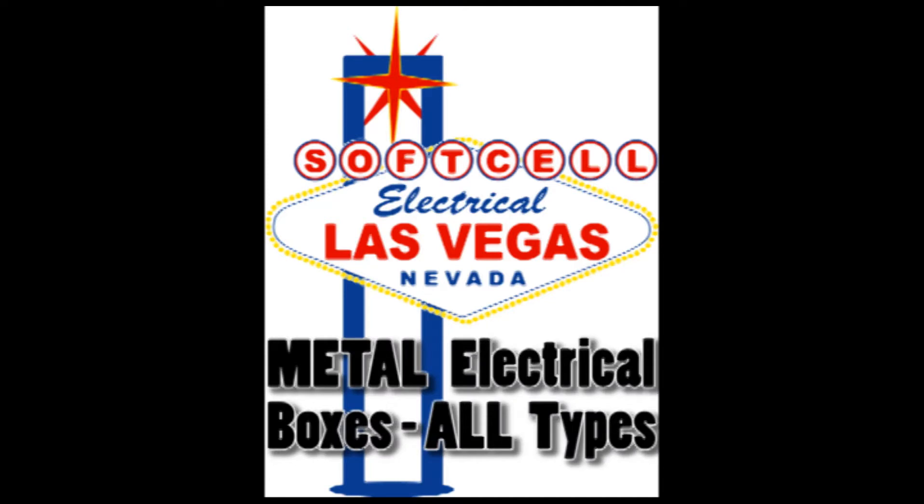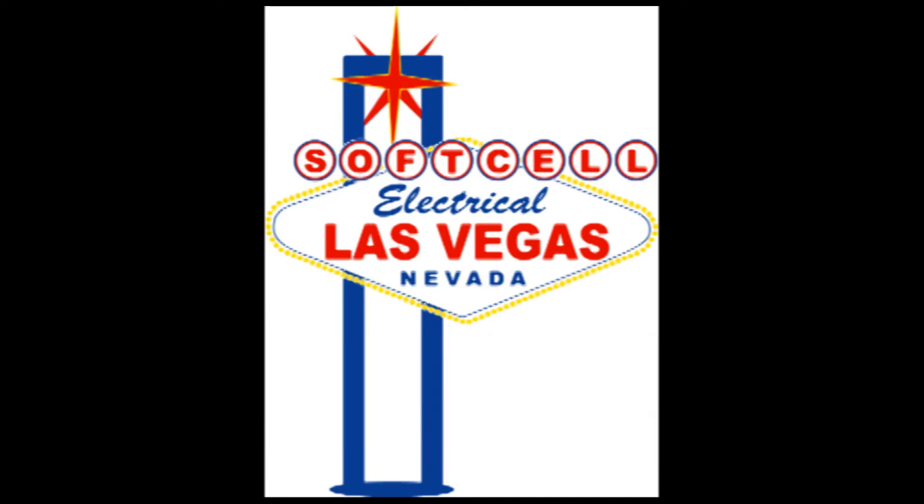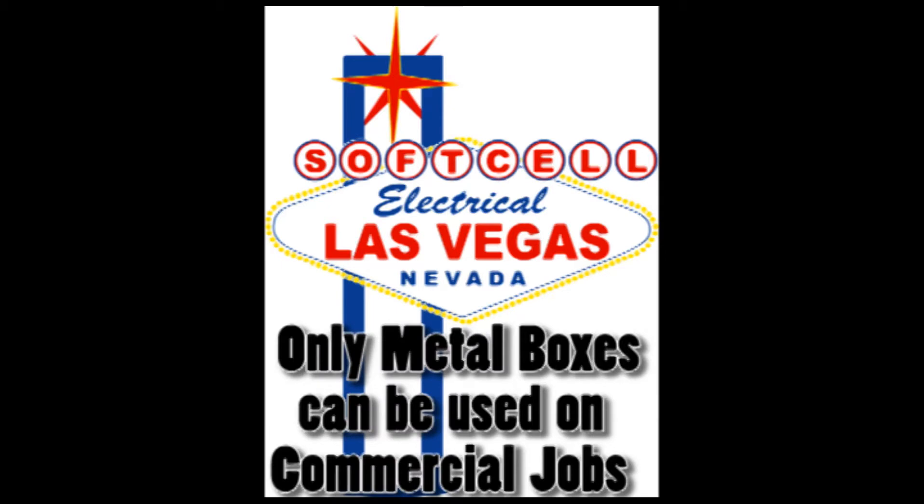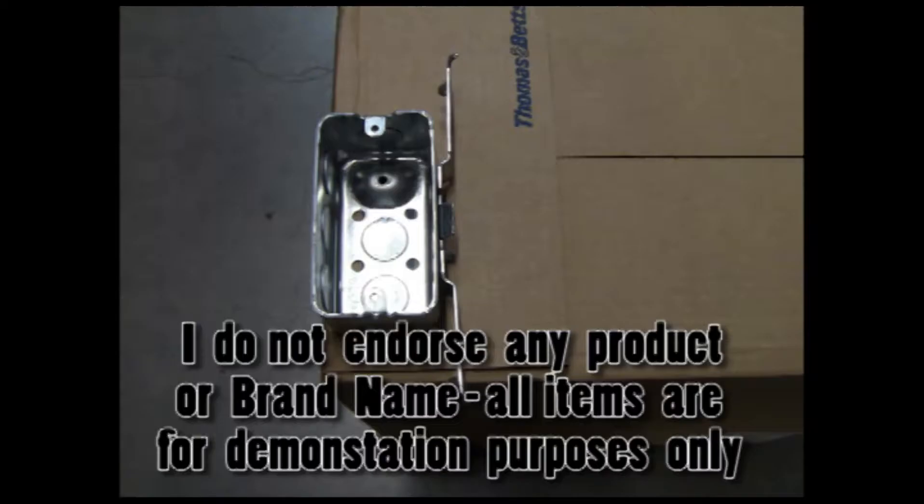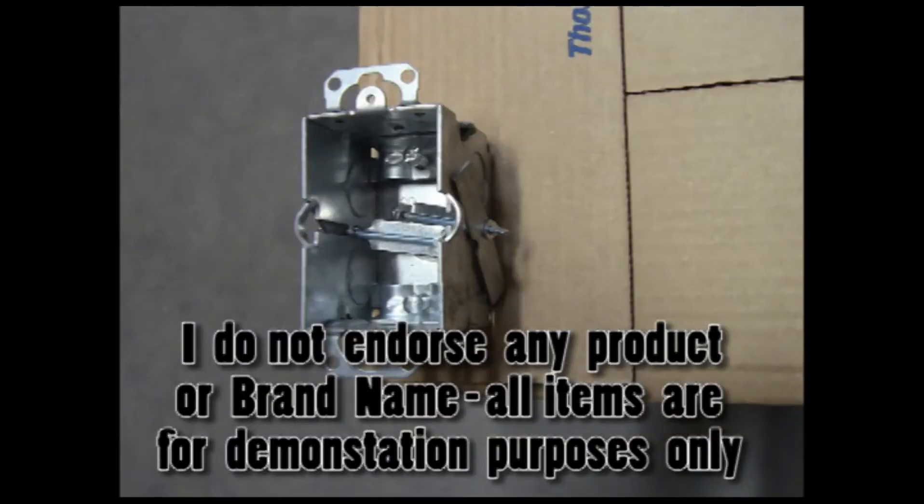In this segment, we're going to review metal electrical boxes of all types and varieties. The main difference between metal and plastic boxes is that only metal boxes can be used in commercial and industrial applications. They can also be used for residential use.